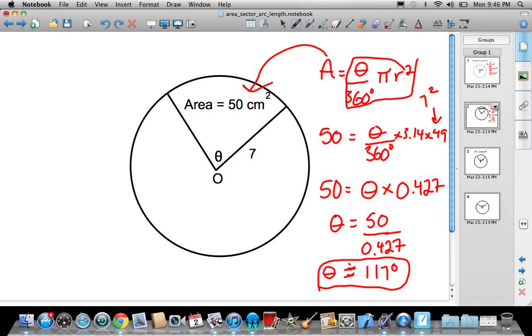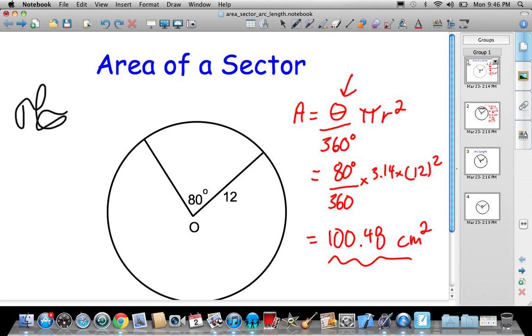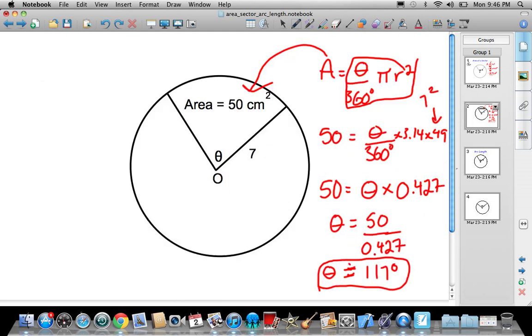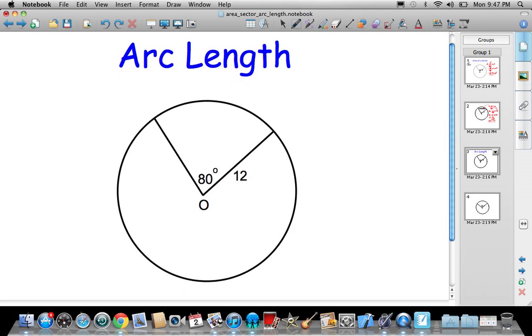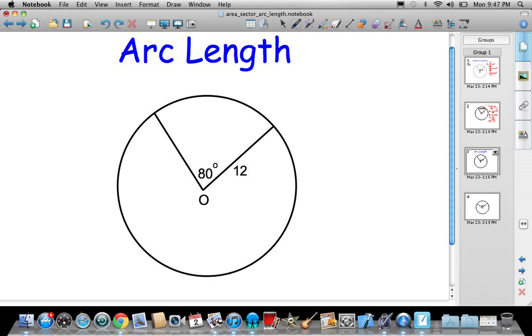Let's have a look at arc length now. Similar question to the first one actually, we're just trying to find arc length. All arc length is, is this guy, the arc of the circle created by the central angle here of 80 degrees. If we're looking for an arc, you can see that's some percentage of the circumference of a circle or some fraction of the circumference of a circle.